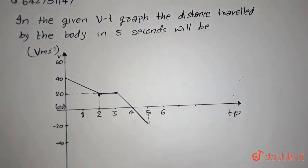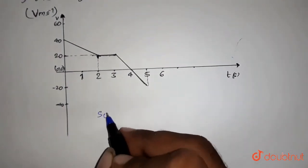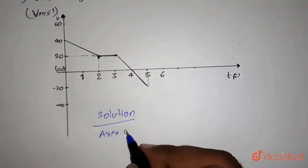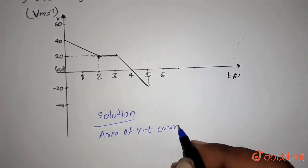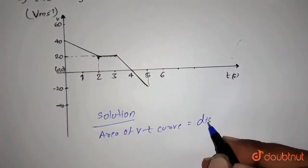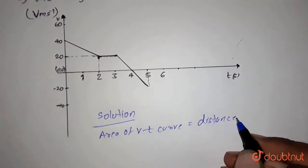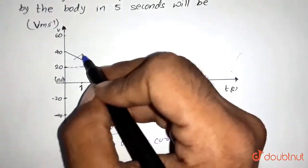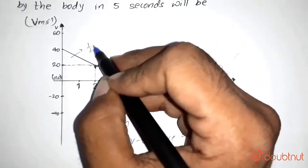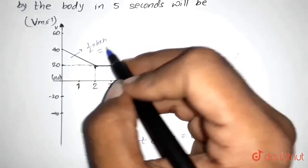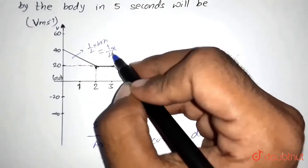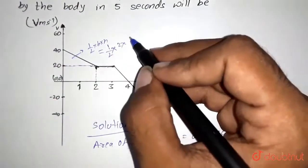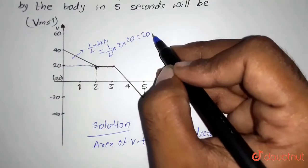As we know, area of velocity-time graph curve gives distance. So area of this part will be, since it is a triangle, half into base into height. That is equals to half into base is 2 into height is 20. That is equals to 20 meters.